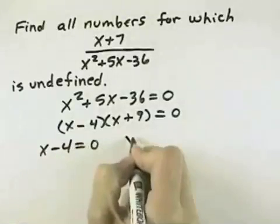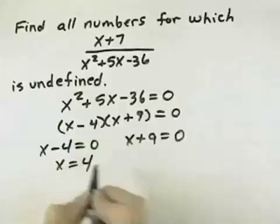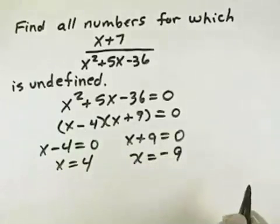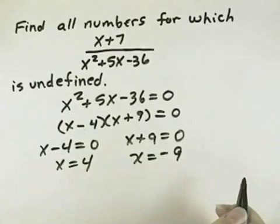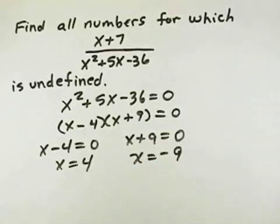So setting each of those equal to 0, we can solve the first one by adding 4 to both sides to get x equals 4. In the second one, we subtract 9 from both sides to get x equals negative 9. So the two values that make this rational expression undefined are 4 and negative 9.